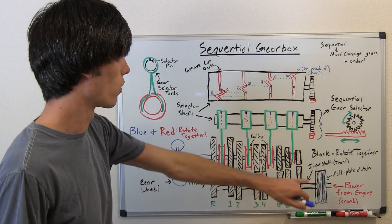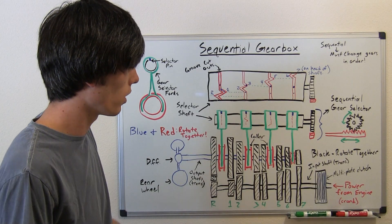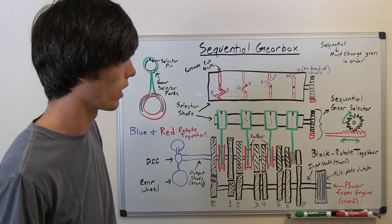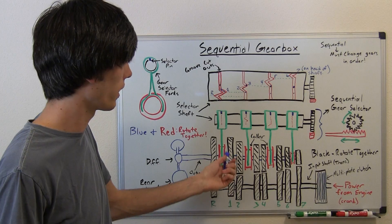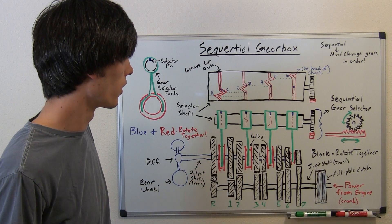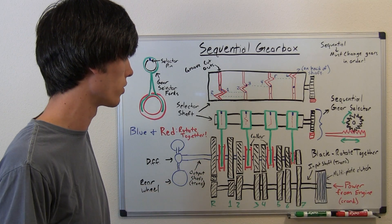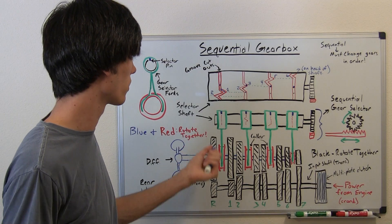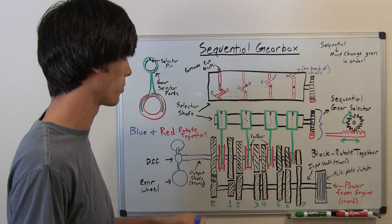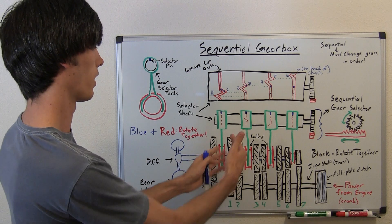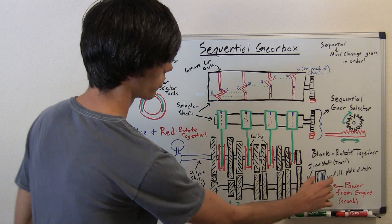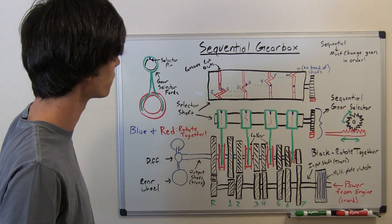And also for sequential gearboxes in Formula One, you only use the clutch to engage the first gear. Other than that, it does fine just selecting them. So unlike in our cars where you push in your clutch and then go into a gear, for sequential gearboxes you can just simply say I want to go from first to second, and it'll do it without using the clutch. The clutch will be engaged the entire time. So another good thing about it.